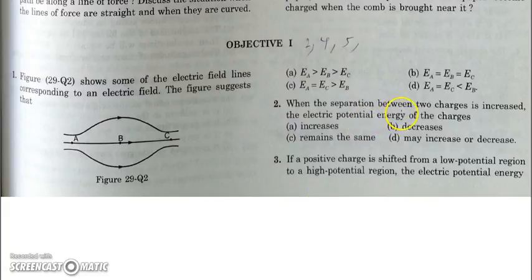The next question is when the separation between two charges is increased, we have to find how the potential energy of the system will change. If the charges are positive and you increase the separation, then the potential energy of the system will decrease. But if the charges are of positive and negative polarity and then you increase the distance, then the potential energy will increase. So it depends on the type of charges. So the answer should be D because it may increase and it may decrease. Again, it will decrease if the charges are of same polarity and it will increase if the charges are of opposite polarity.